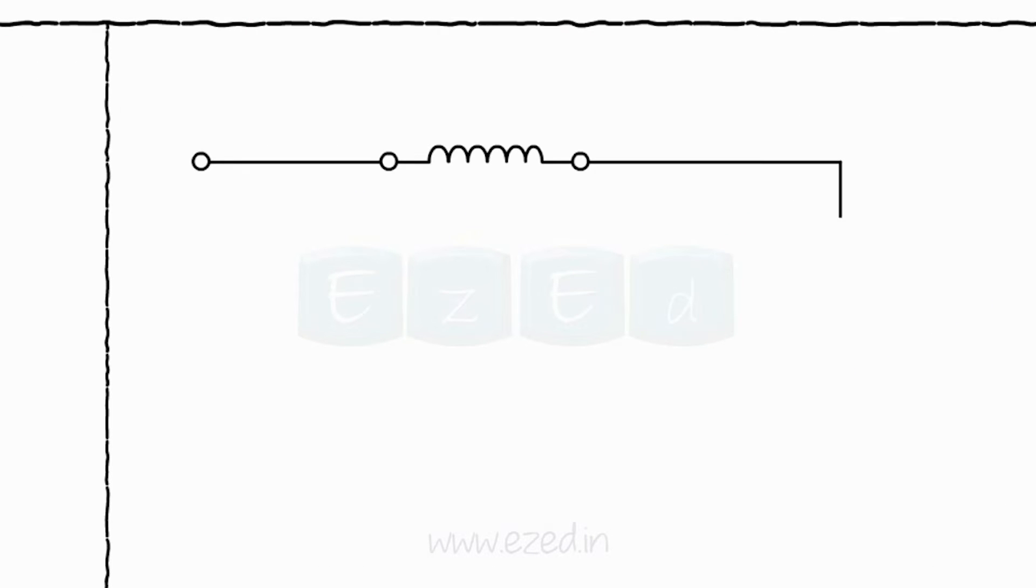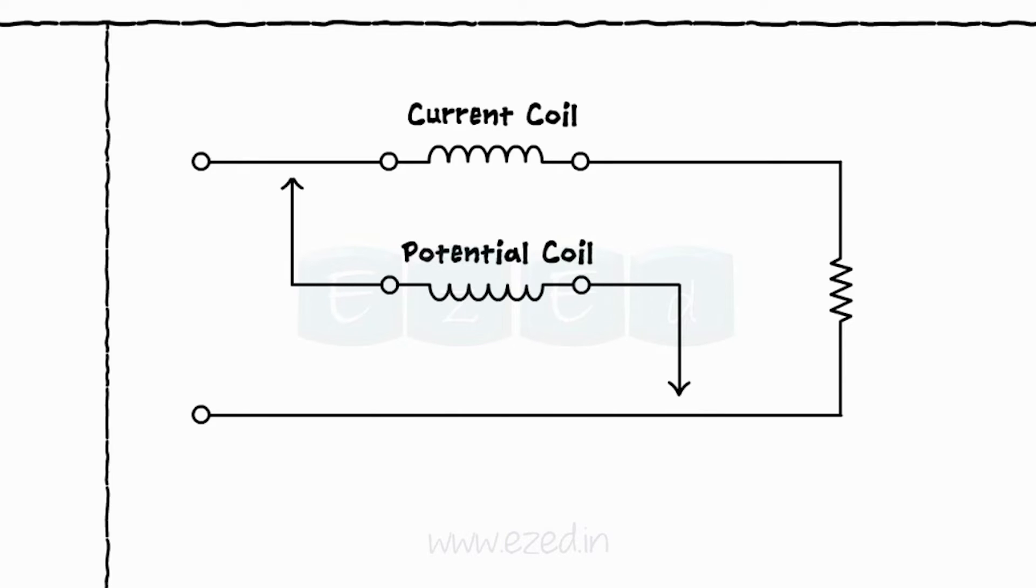It mainly consists of a current coil in series with the load and a potential coil or pressure coil connected across the load.